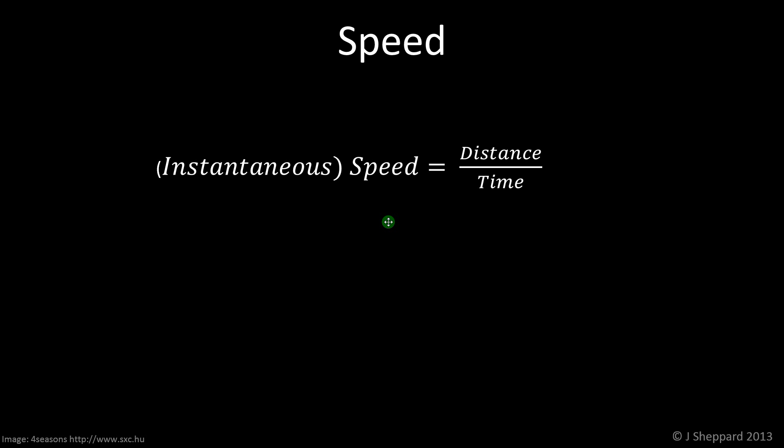The equation for speed is on the formula sheet. It doesn't mention the word instantaneous, which we'll come on to in a second. As with all equations, we've got to be careful with units. These are fairly straightforward: meters for the distance, seconds for time, and meters per second for speed.